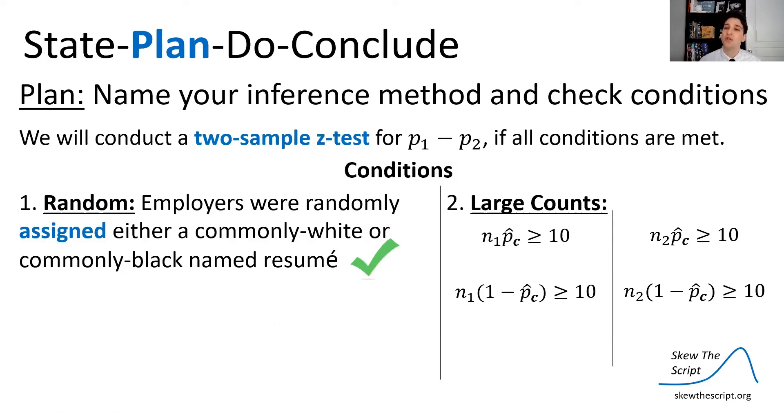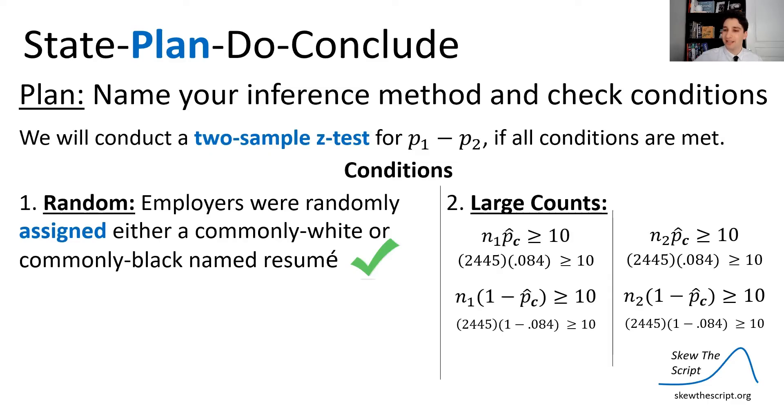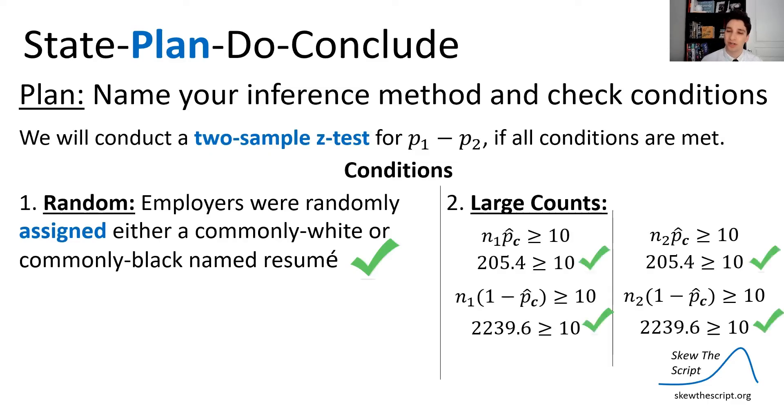Lastly, the large counts condition. Note that for the large counts condition, I am putting in the combined sample proportion that were hired, because that's what we have in terms of our data, and we're not making the assumption under the null that there's a difference here. So we're going to use that combined sample proportion there. What we do is we get these calculations, and they're all greater than or equal to 10, so we're good to go. So note that large counts condition is slightly different than it is under the confidence interval where it uses different proportions.